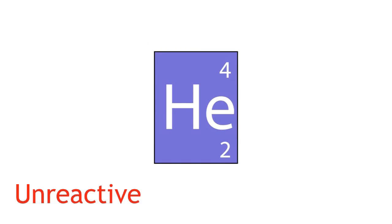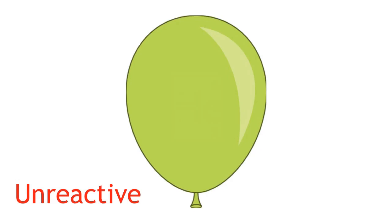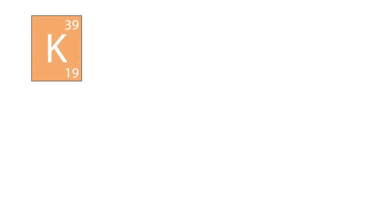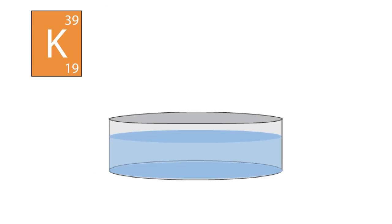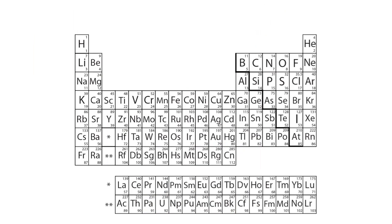For example, some gases are completely unreactive with everything, while some metals have vigorous reactions with water. Properties like these allowed elements to be grouped together.